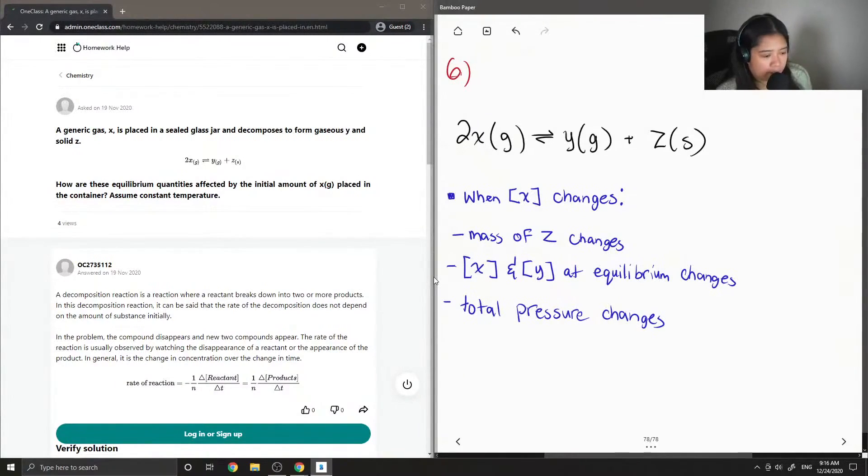And the only thing that stays constant is the rate of reaction between the two gases, X and Y. This, at equilibrium, is constant.